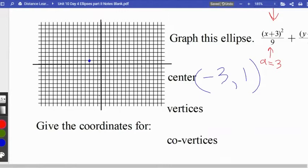The vertices are going to come from here, a equals 3, because the letter a is connected to the vertices, connected to the major axis. The square root of 9 is 3. That means I'm going to move 3 to the right and 3 to the left. There you go. There is my major axis. Those red points are my vertices. So I have one point at 0, 1 and another point at 6, 1. They're both 3 away from my center.